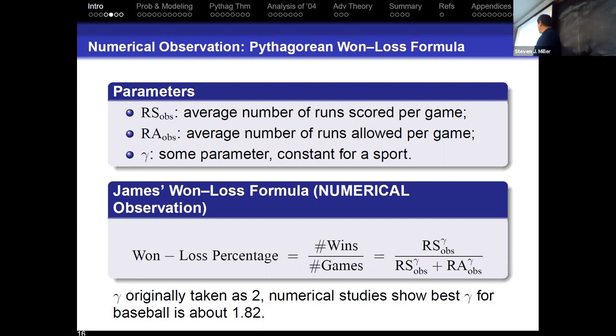Anybody have a guess why he called this the Pythagorean won-loss formula? Won-squared over won-squared plus loss-squared. Why is he calling it Pythagoras? Where do you think the name comes from? Yeah, the old Pythagorean theorem. A-squared plus B-squared is C-squared for a right triangle. You know, baseball's played on a diamond. You know, yes, you have the triangle in Fenway Park in the outfield, but it's just a good name. He's seen sums of squares before. This is the level of mathematics. Now, the question is, why is this true?